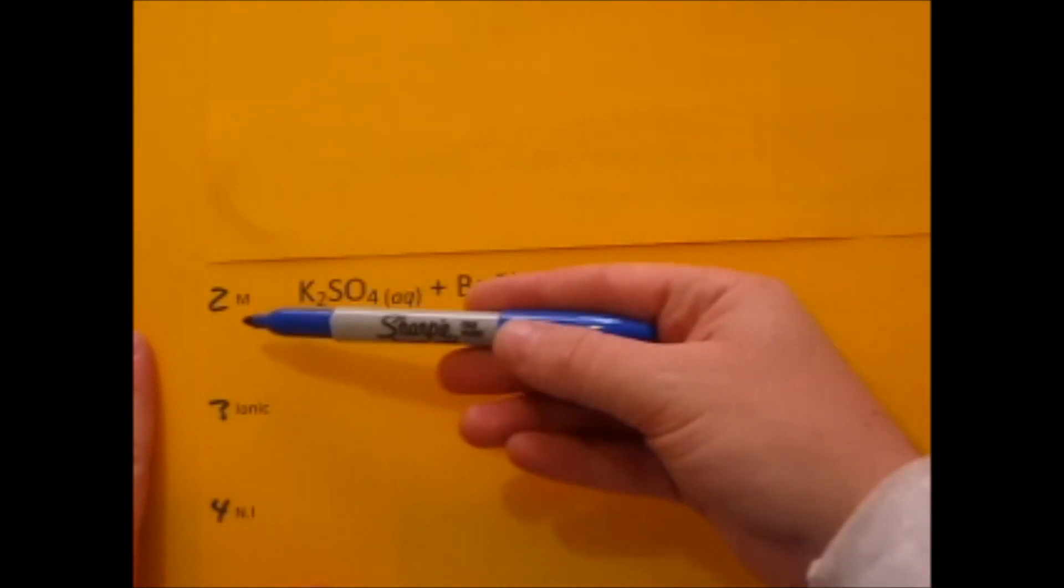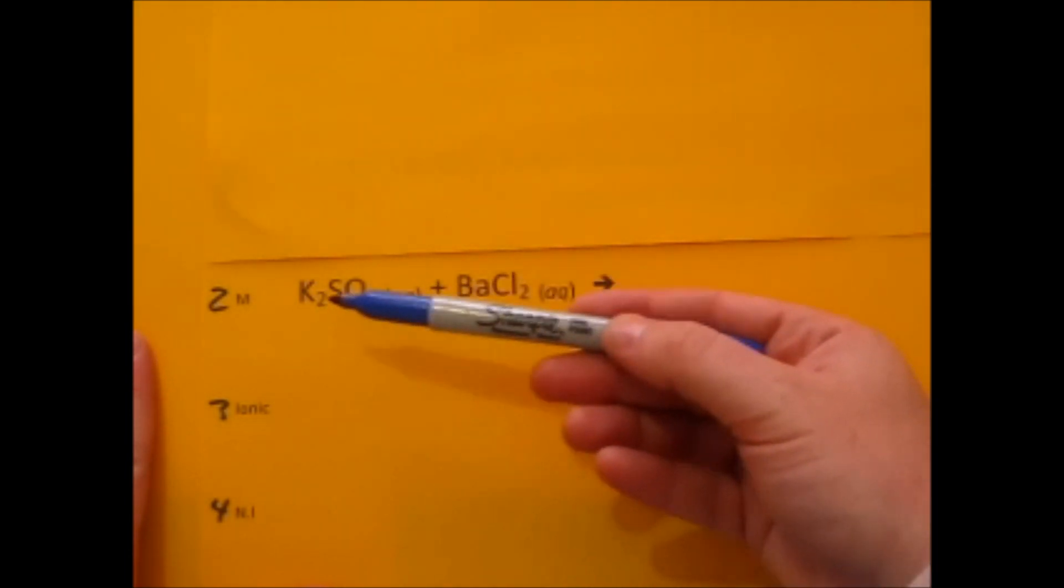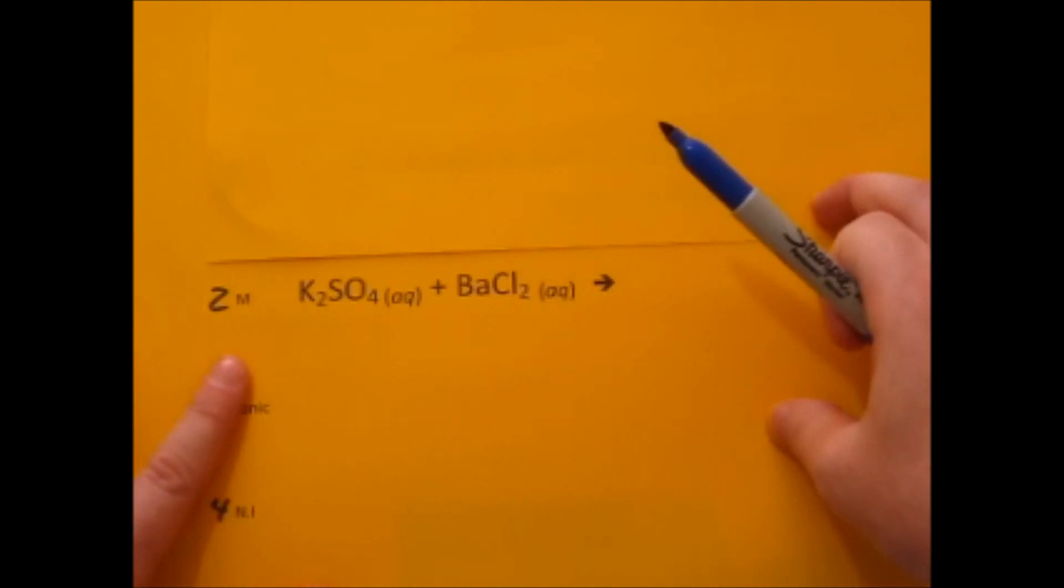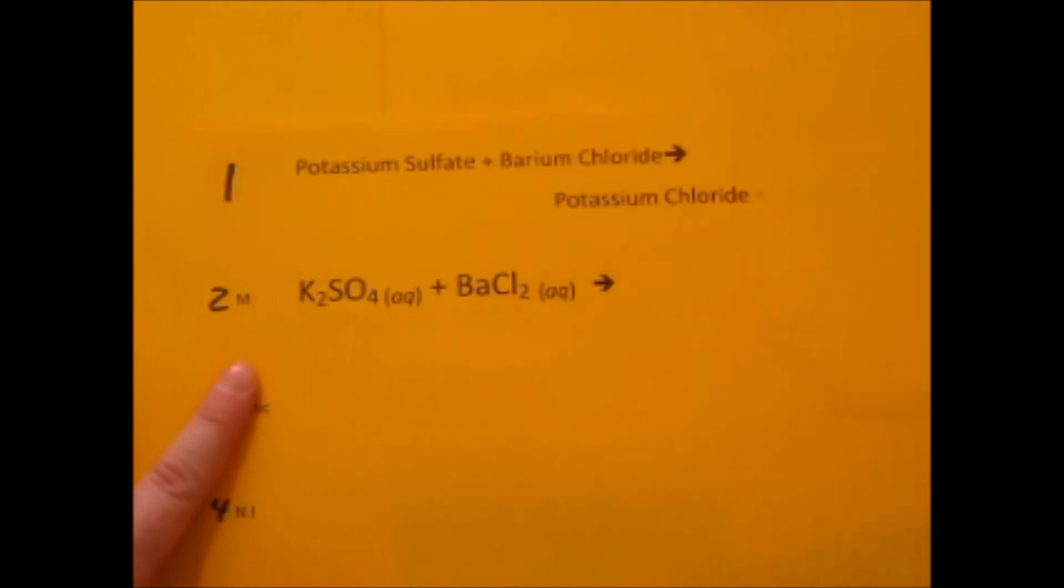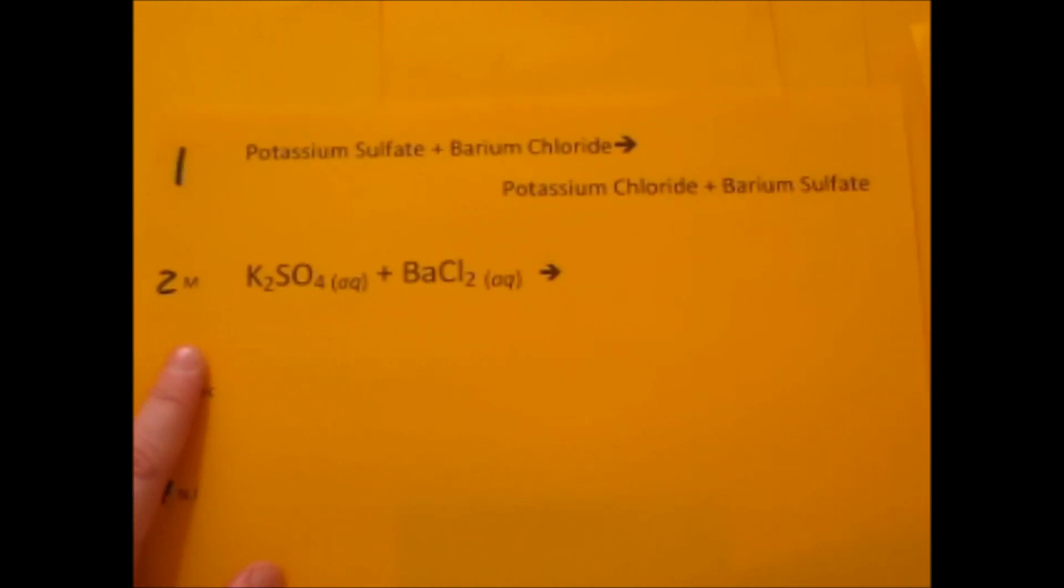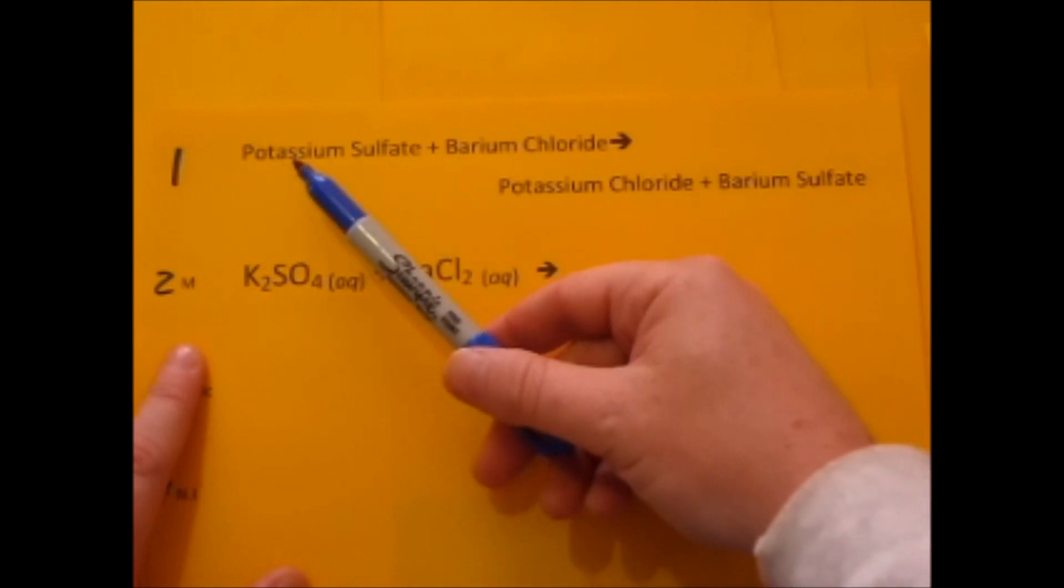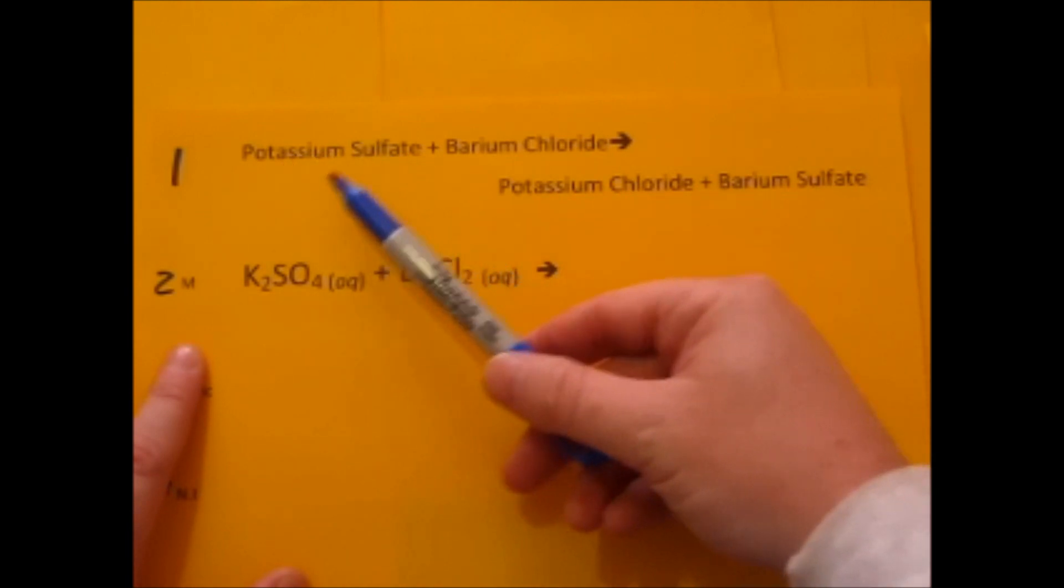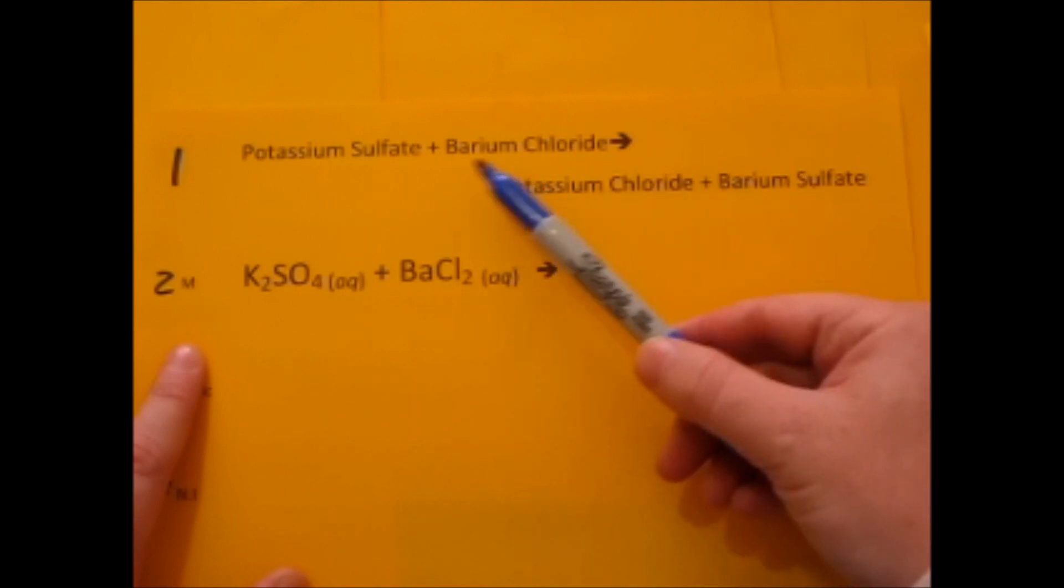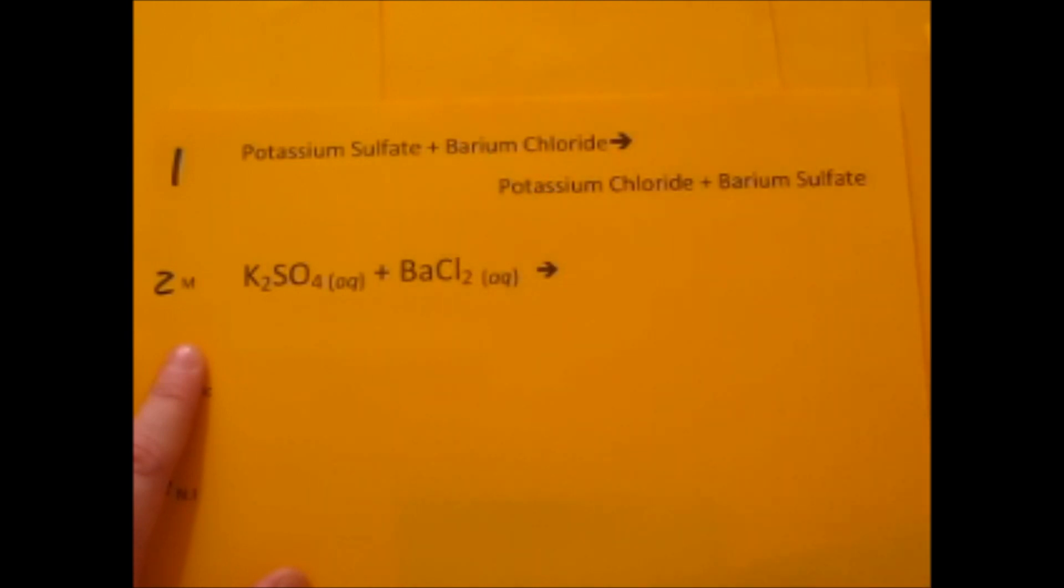So step one, you're going to write on the molecular line the formulas for your two reactants that you're given. Step two, you're going to write the names of the reactants, which are potassium sulfate and barium chloride. Step three, you're going to write the names of the products. So you just take potassium and switch last names. Potassium instead of sulfate is now potassium chloride, and barium gets sulfate's last name.